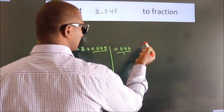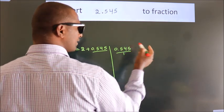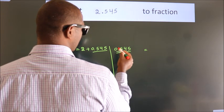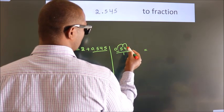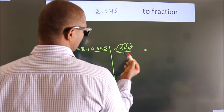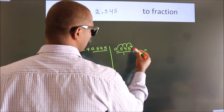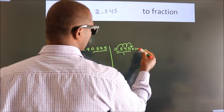So 0.545. To convert this to fraction, for that we have to move this decimal after 1, 2, 3 numbers. To move this decimal after 3 numbers, for that we have to multiply it with 1000.